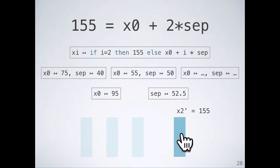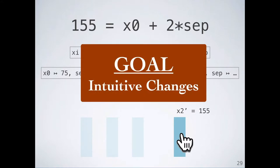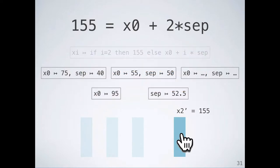Given all of these options, what should we do? Recall that one of our goals is to provide intuitive updates, and one way to provide that is to preserve as much of the existing program as possible. Consequently, we choose not to introduce control flow. Similarly, changing both x0 and sep is not intuitive, because there's no clear way to say how much one should change versus the other.